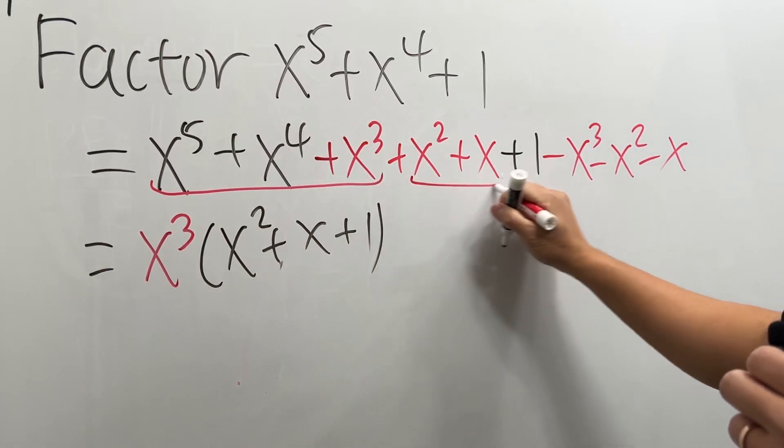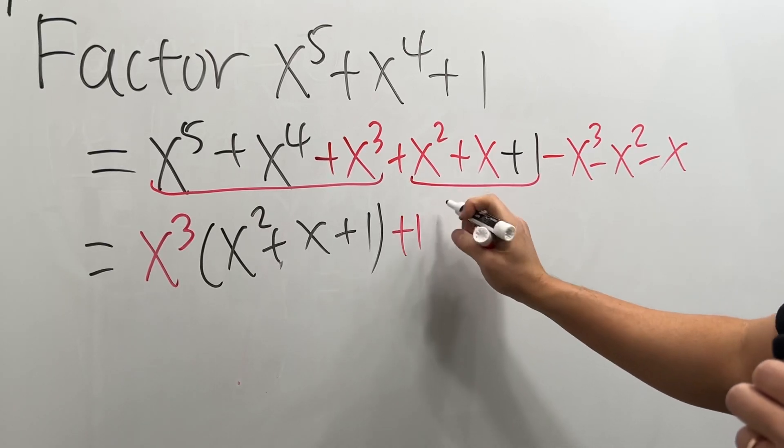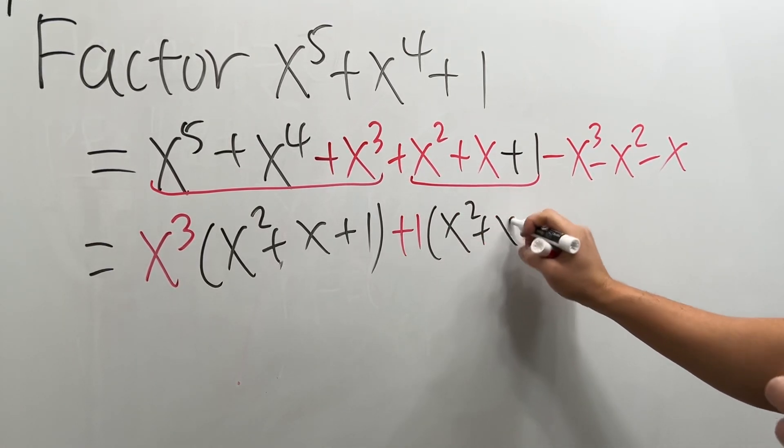And then next, this right here, let's just factor out plus 1. So we will have x squared plus x plus 1.